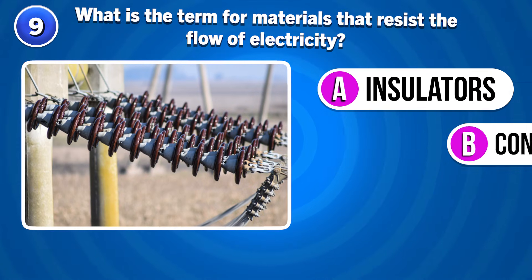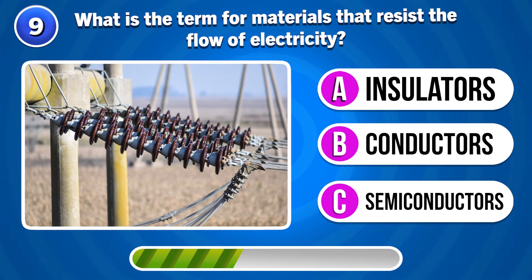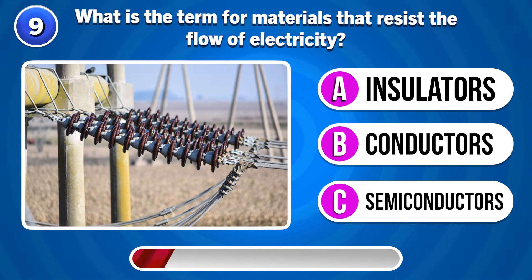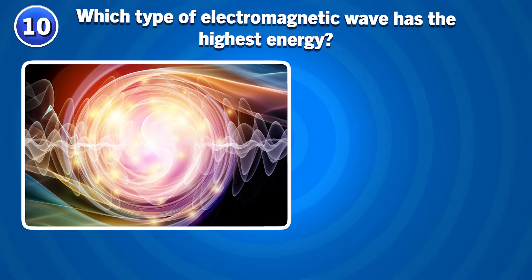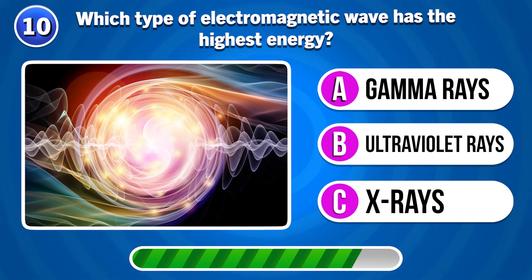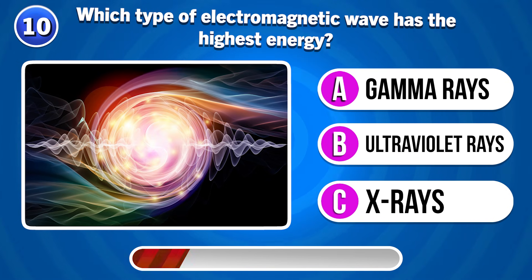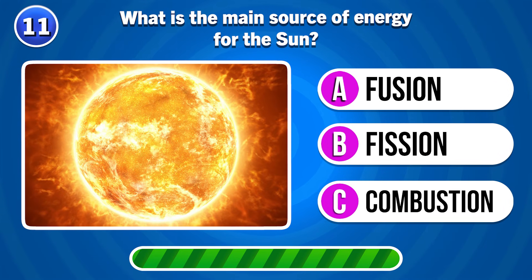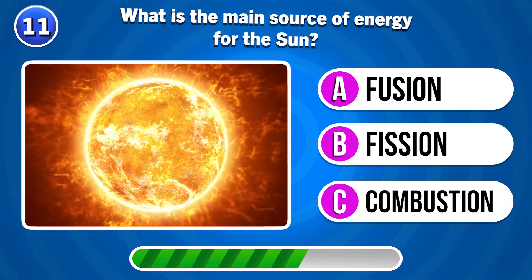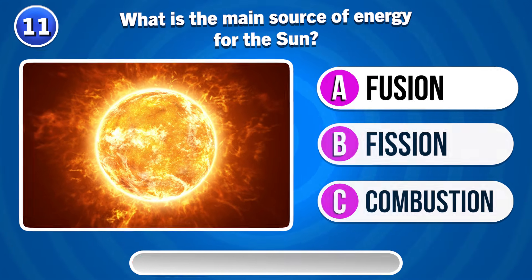What is the term for materials that resist the flow of electricity? Insulators. Which type of electromagnetic wave has the highest energy? Gamma rays. What is the main source of energy for the sun? Fusion.